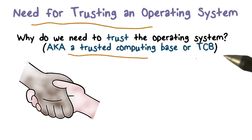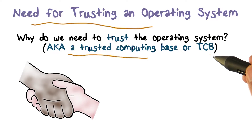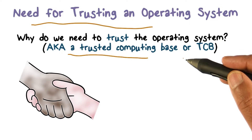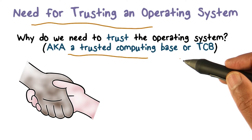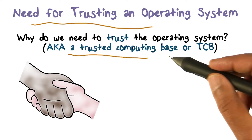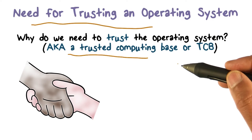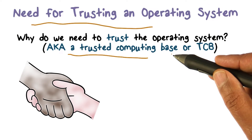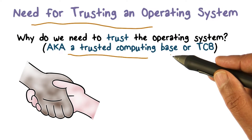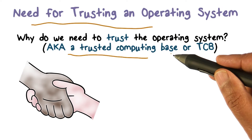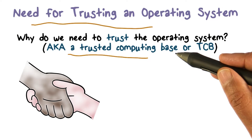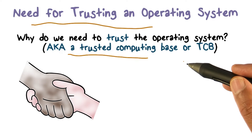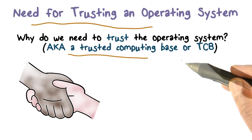Let's see why we call it a TCB, or trusted computing base. It is the base in some sense — if you don't directly want to deal with the hardware, applications run on top of the operating system. So the operating system really is the computing base that is seen by the applications or the user processes.